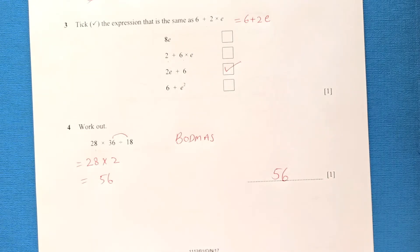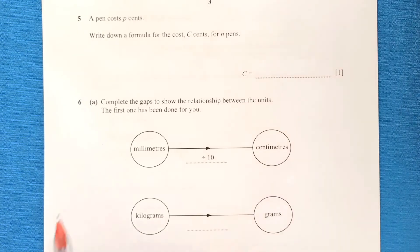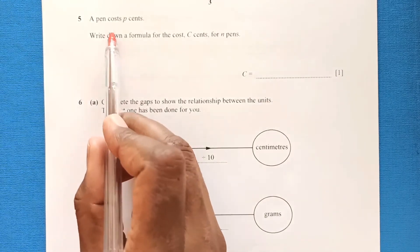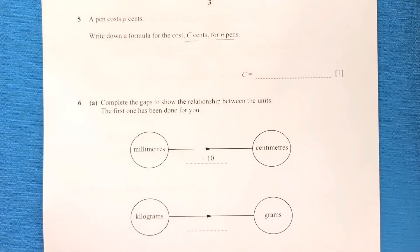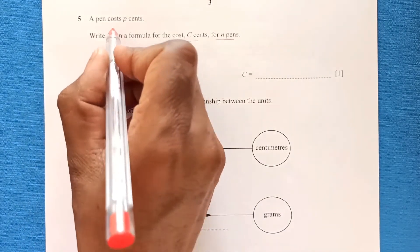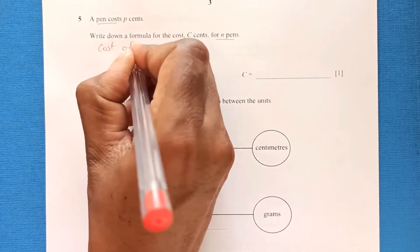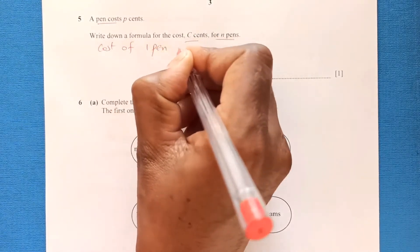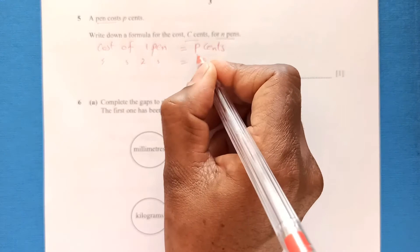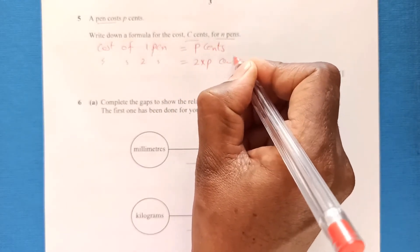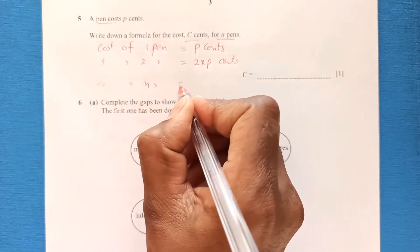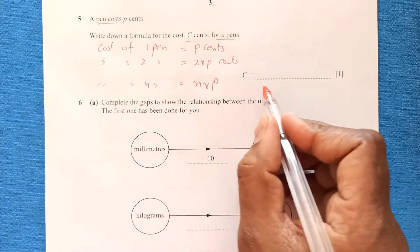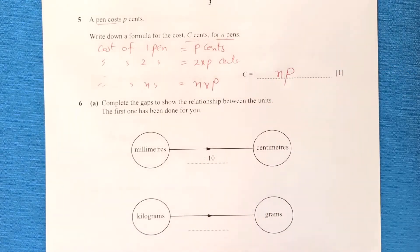Question five: a pen costs p cents. Write down a formula for the cost C cents for n pens. The cost of one pen is p cents, cost of two pens is 2p cents, and similarly the cost of n pens is n times p. So the formula is C = np.